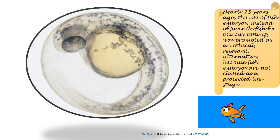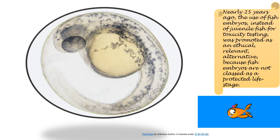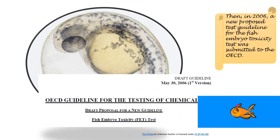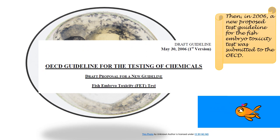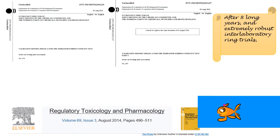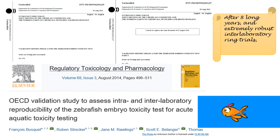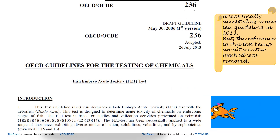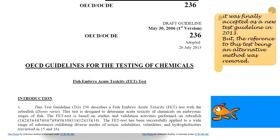Nearly 25 years ago, the use of fish embryos instead of juvenile fish for toxicity testing was promoted as an ethical, relevant alternative, because fish embryos are not classed as a protected life stage. Then in 2006, a new proposed test guideline for the fish embryo toxicity test was submitted to the OECD. After eight long years and extremely robust inter-laboratory ring trials, it was finally accepted as a new test guideline in 2013.